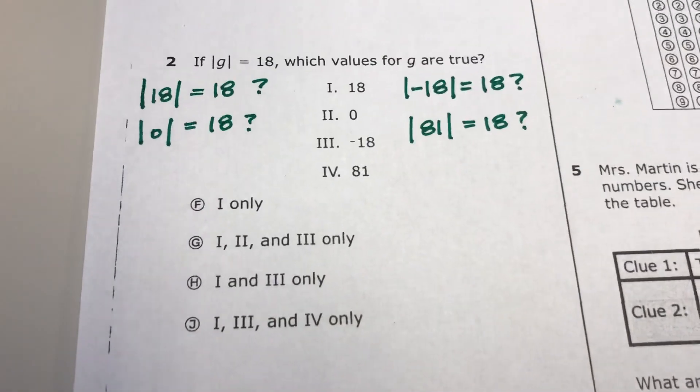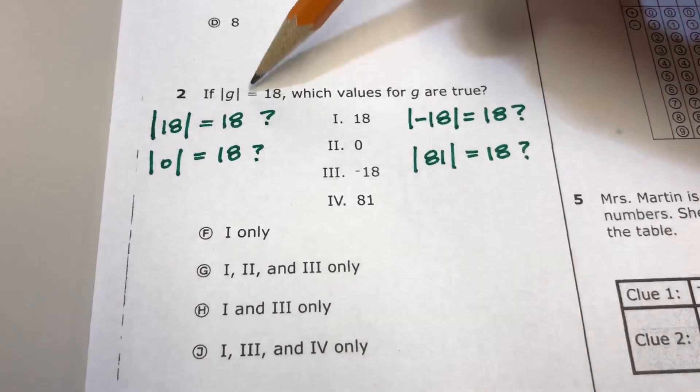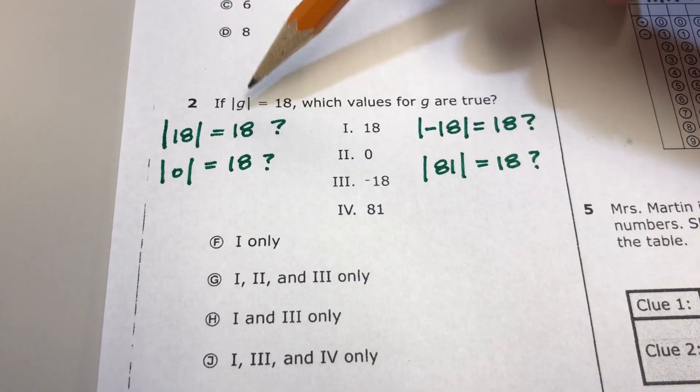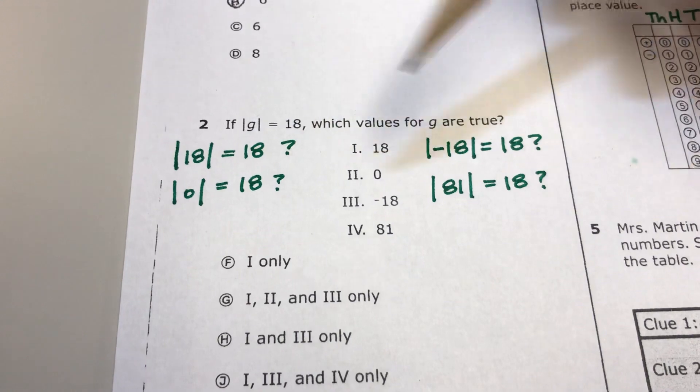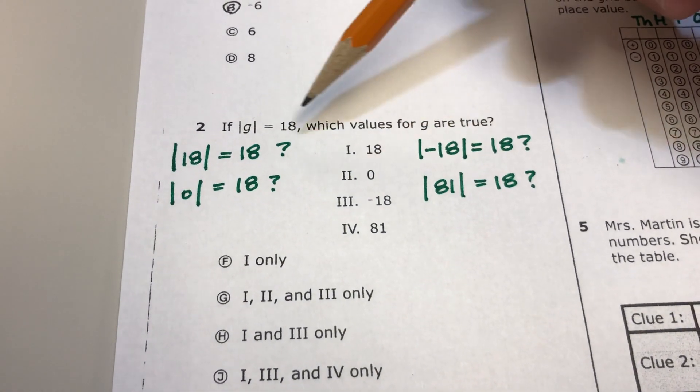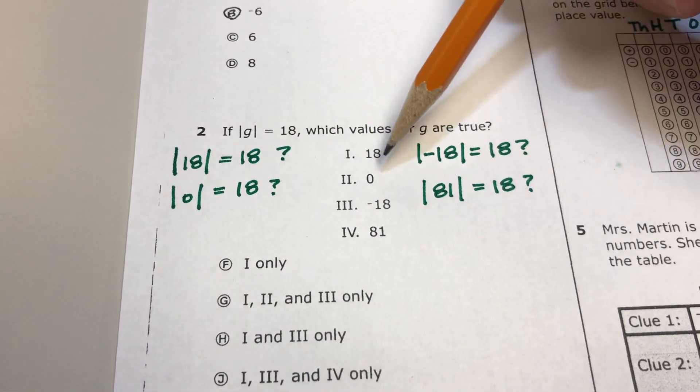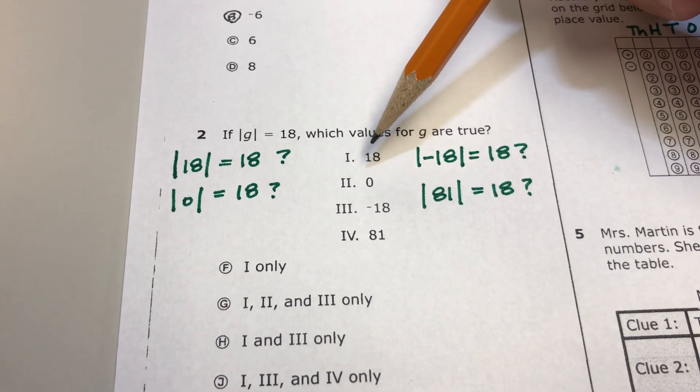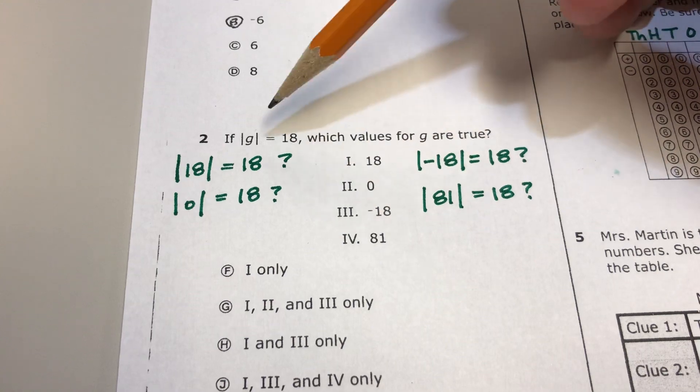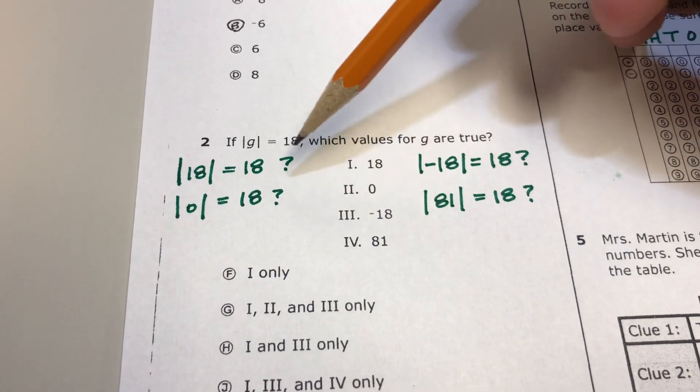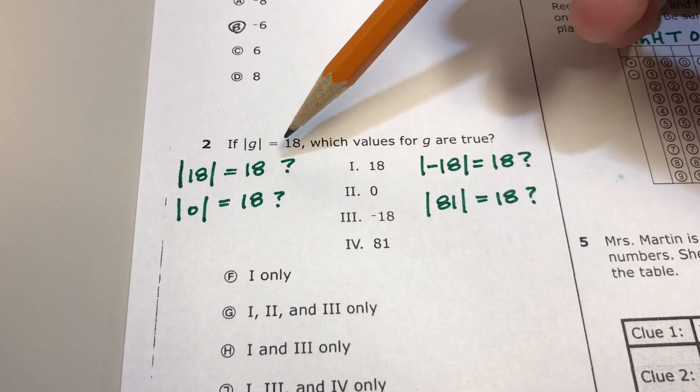This question here, we had some students having trouble. They didn't understand what it meant by having the G inside of the absolute value bars. That's just a variable, and then what this is saying is, what if you plug in 18 for G? So instead of G, what if it's 18? So what it's saying is, what if it's 0 instead of G? What if it's negative 18 instead of G? What if it's 81 instead of G? Which one of those would make this true?